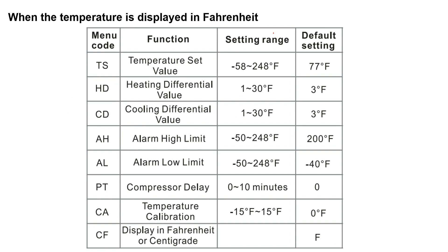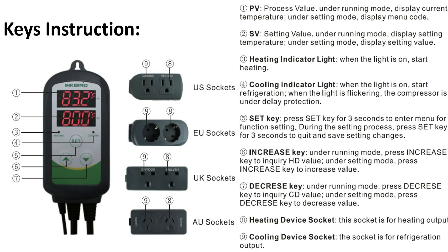These are the setting ranges and default settings in Fahrenheit as well. There are two LED displays: one is the process variable display — under running mode, the process temperature is displayed here; under setting mode, the menu code is displayed. SV is the setting value — under running mode the set temperature is displayed here, and under setting mode the setting value is displayed here.